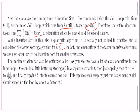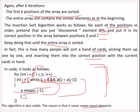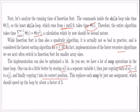We can optimize this implementation. There are many swap operations in the inner loop, but we can do better by storing a[i] in a separate variable t, then copying a[j minus 1] to a[j], and finally copying t into its correct position. This replaces each swap with just one element move rather than three, which should speed up the loop by about a factor of 3.